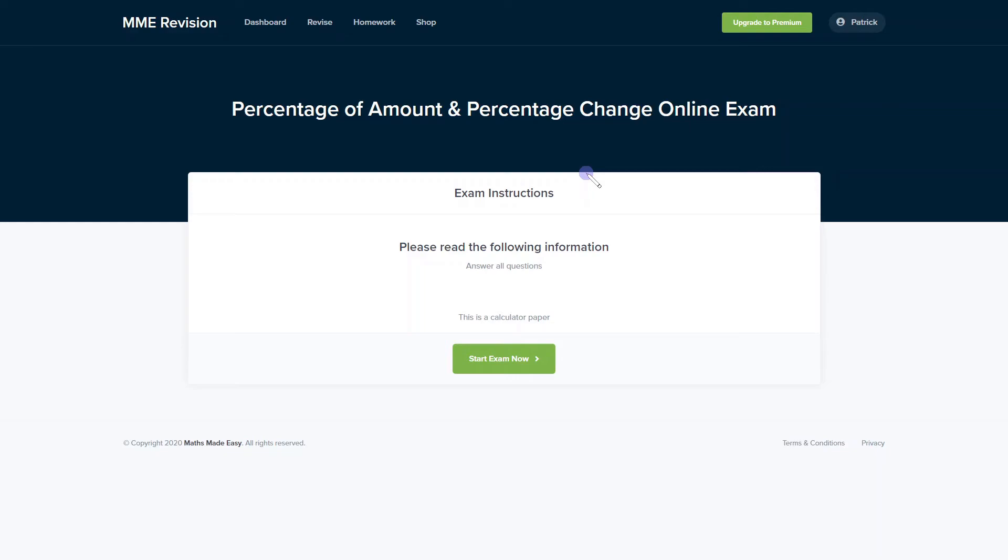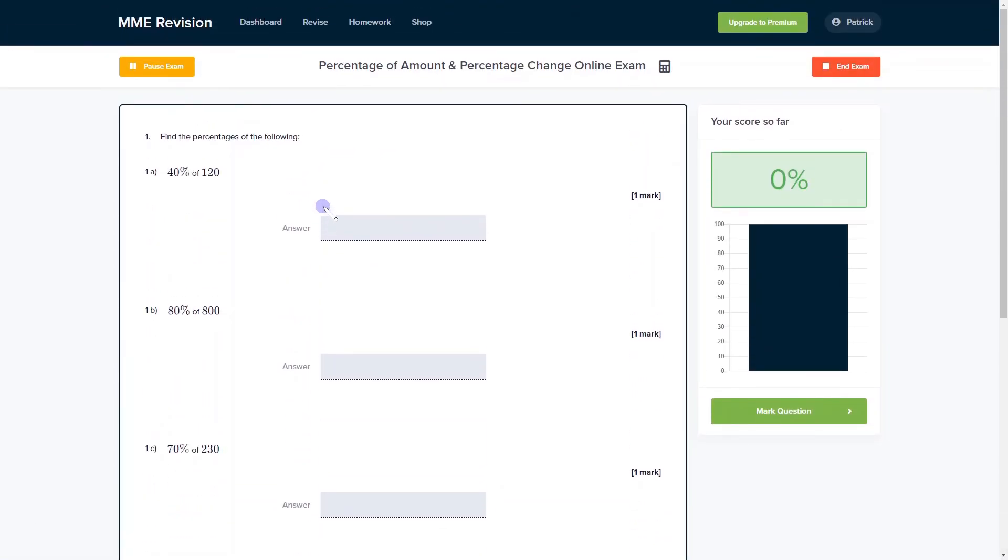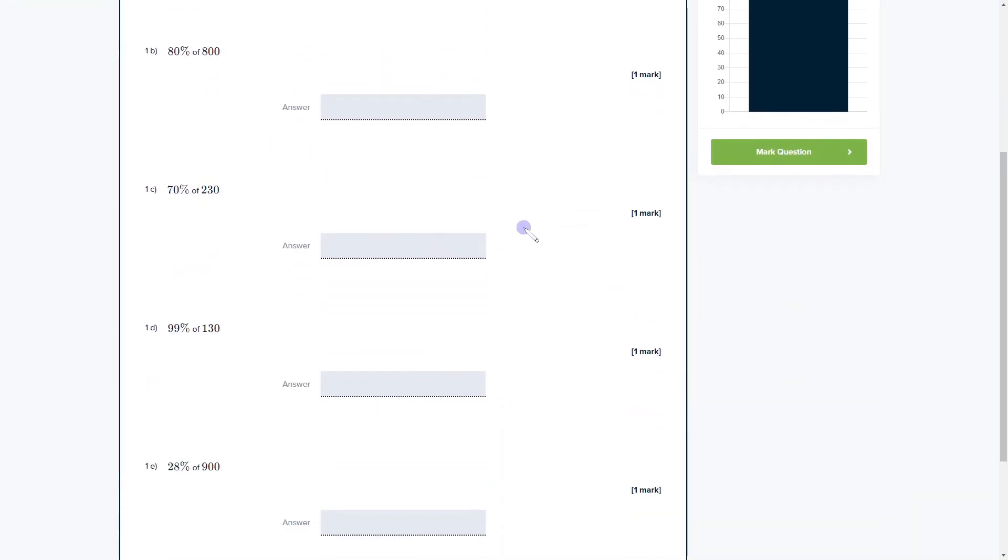Being able to work with percentages is an essential skill, so it's important that you get a lot of practice. You can do so with our online exam, available through our revision platform. If you take the test, you'll find loads of different questions with instant feedback on all of them. This is really good if you want to keep track of the areas you're weakest at and what you need to improve. If you're interested, click the link below.